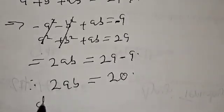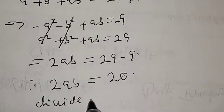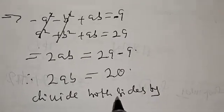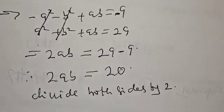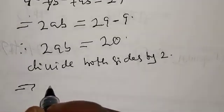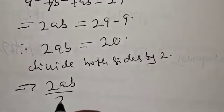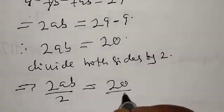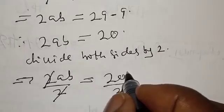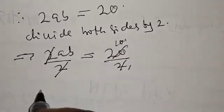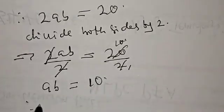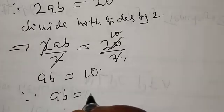We divide both sides by 2. This gives us 2ab over 2 equal to 20 over 2. The 2s cancel, so ab equals 10. Therefore our final answer is ab equal to 10.